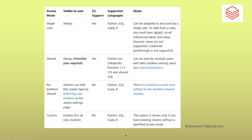This snippet shows how different access modes vary in their UC support. Single User has UC support enabled. For No Isolation Shared access mode, as I showed, UC is not enabled. Also, when using Single User access mode, dynamic views are not supported. In upcoming videos we will also cover what dynamic views are and how to use them in the Unity Catalog.